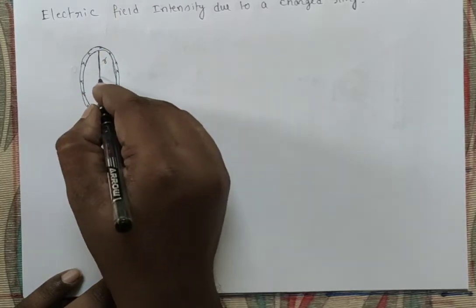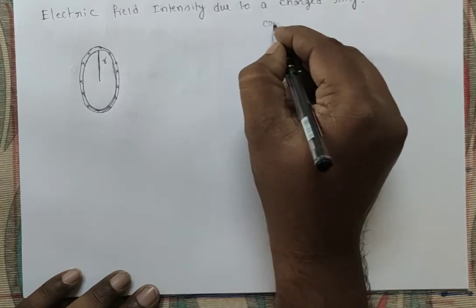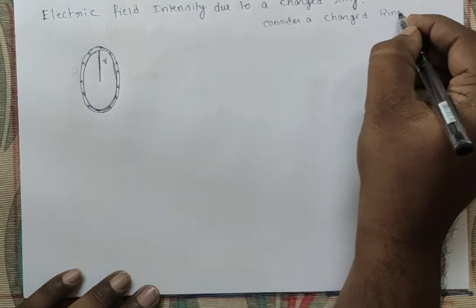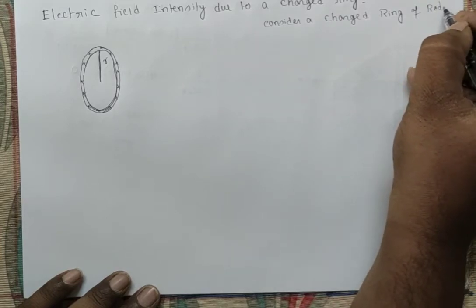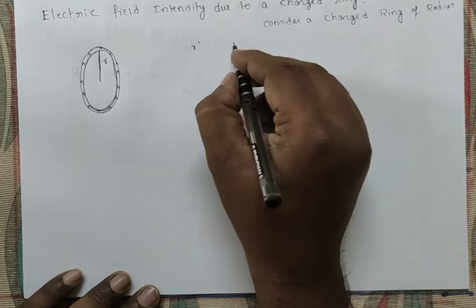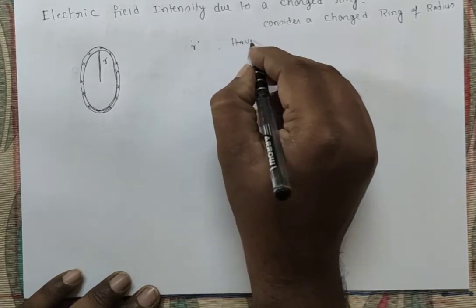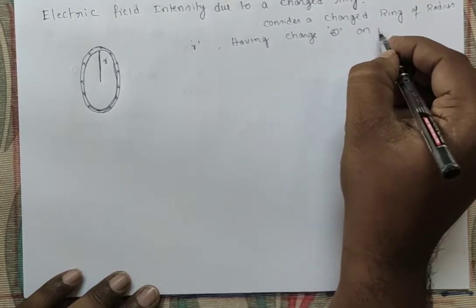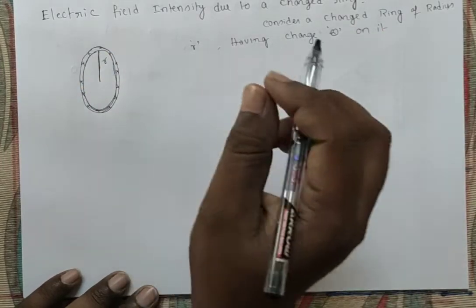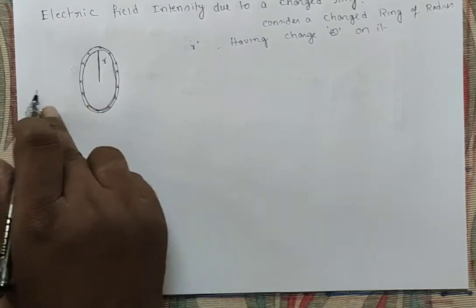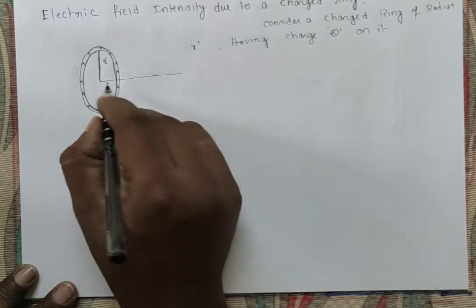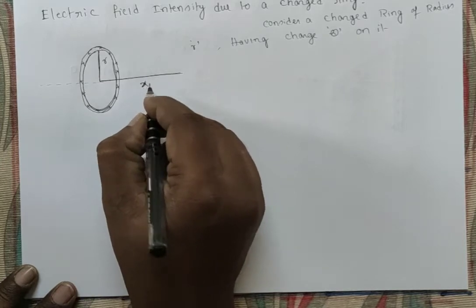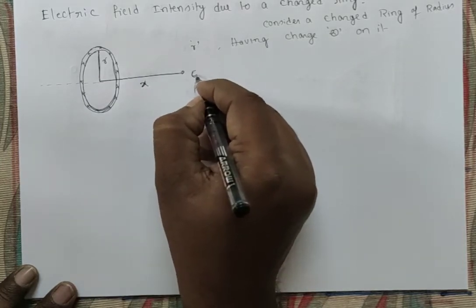Consider a ring of radius R having charge Q on it. Along its axis, from the center at a distance X, we need to find the electric field intensity E.